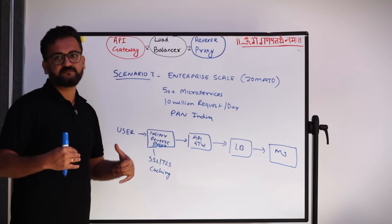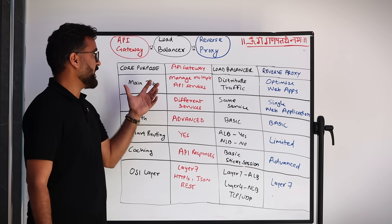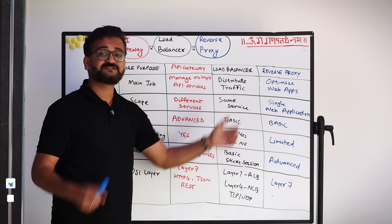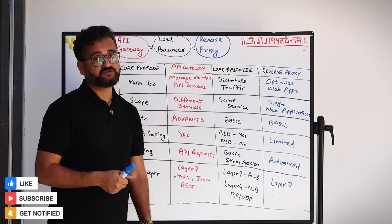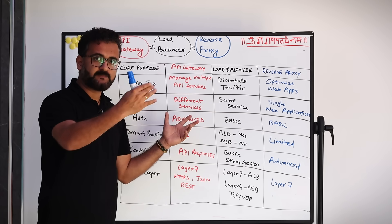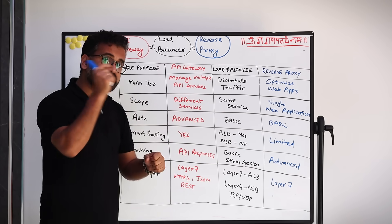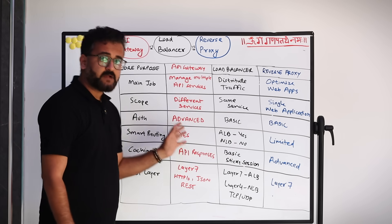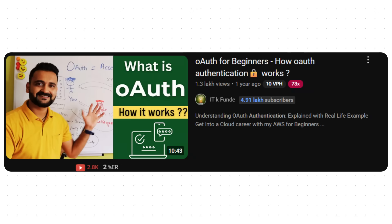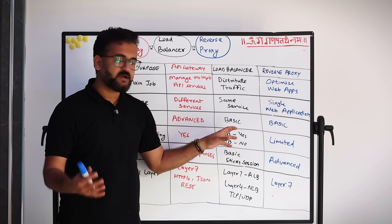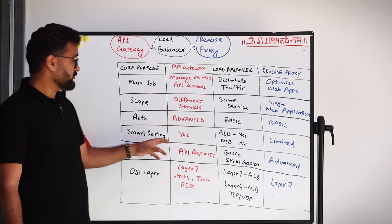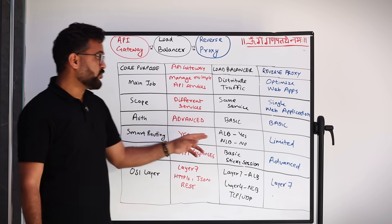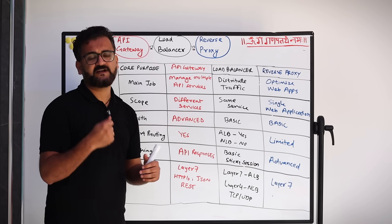Let's do a quick comparison table. Core purpose: API gateway manages multiple API services; load balancer distributes traffic; reverse proxy optimizes web applications through caching and performance boosting. Scope: API gateway covers multiple microservices; load balancer works within the same service; reverse proxy handles a single web application. Authentication: API gateway supports advanced auth like JSON/OAuth; load balancer provides basic authentication; reverse proxy also offers basic authentication. Smart routing is done very well by the API gateway.